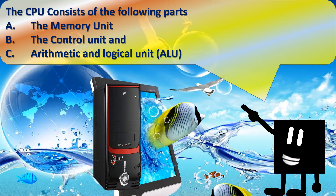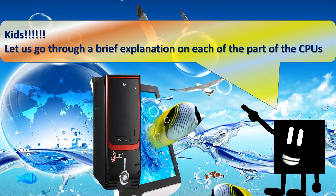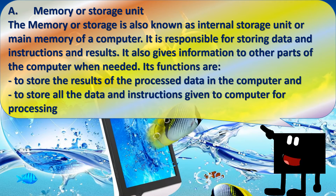The CPU consists of the following parts: A. The memory unit, B. The control unit, C. The arithmetic and logical unit (ALU). The memory or storage unit is also known as the internal storage unit or main memory of a computer. It is responsible for storing data, instructions, and results. It gives information to other parts of the computer when needed. Its functions are to store the results of processed data and to store all data and instructions given to a computer for processing.